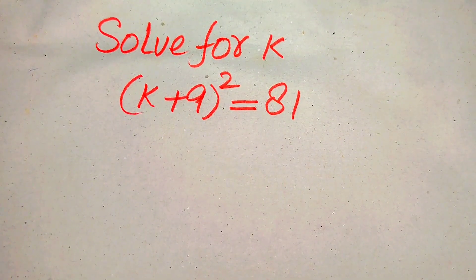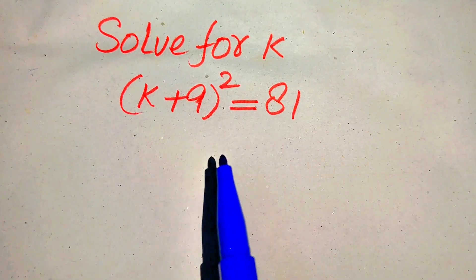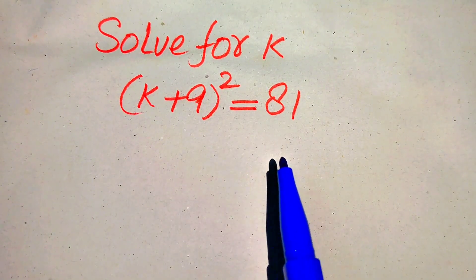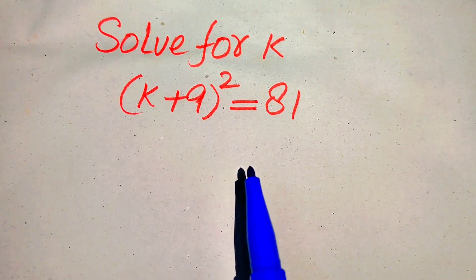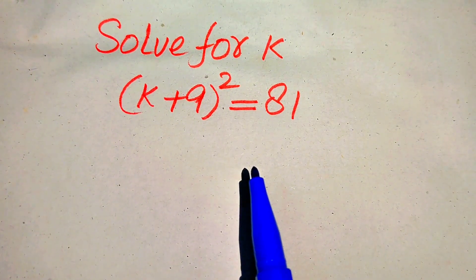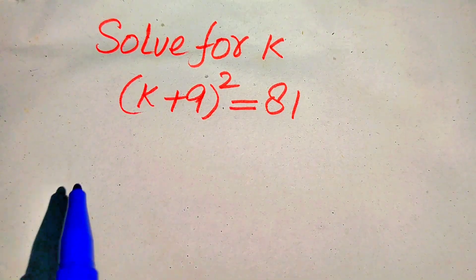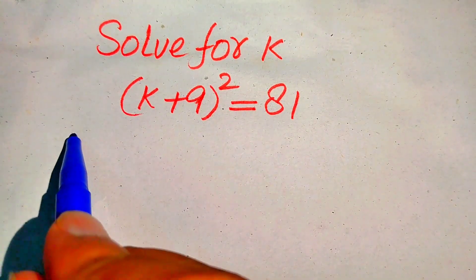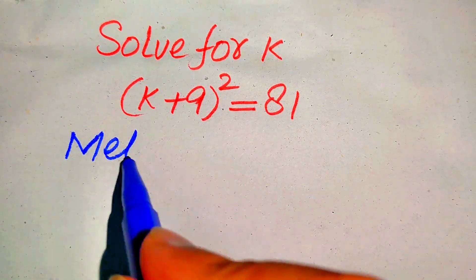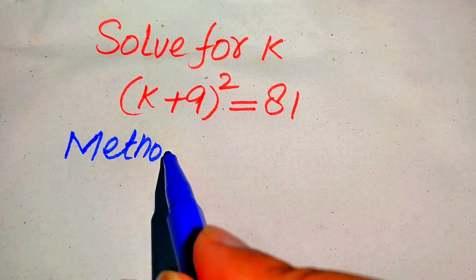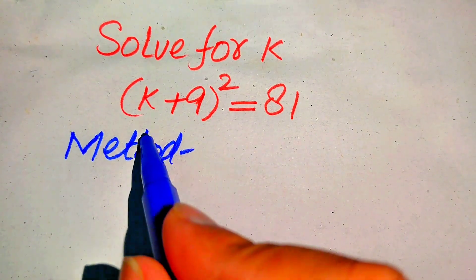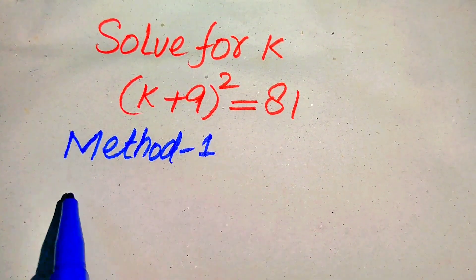Hello everyone. How to solve this problem for the values of k, if we have (k + 9)² = 81. We solve this problem using two methods. I hope you like both of these methods, but if you have any other method in your mind, please don't hesitate to write it into the comment section.